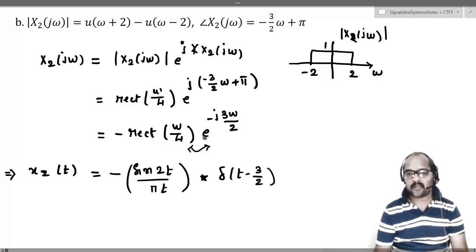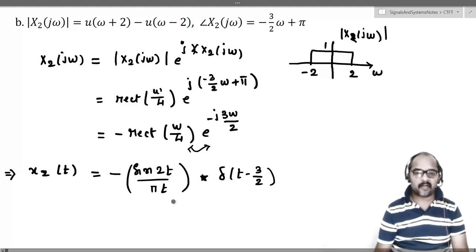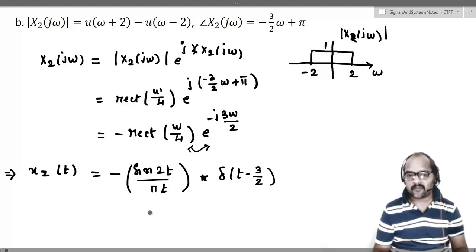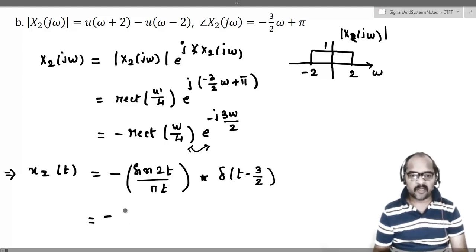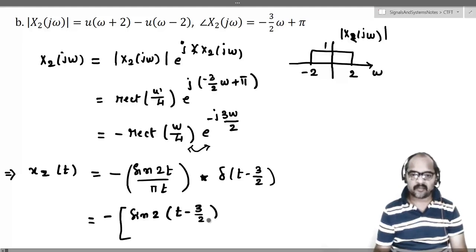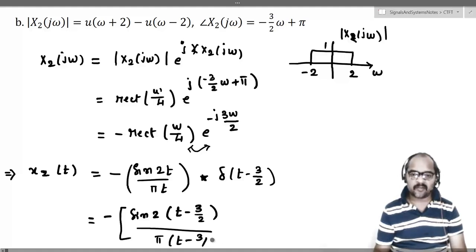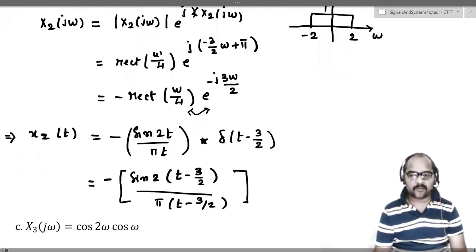δ(t − 3/2) will have e^(−j(3/2)ω) as the Fourier transform. Any function convolved with a shifted delta function — the whole function will shift by that amount to the right. So this should be minus of: sin(2(t − 3/2)) divided by π(t − 3/2). That is the final signal which will have x2(jω) as its Fourier transform.